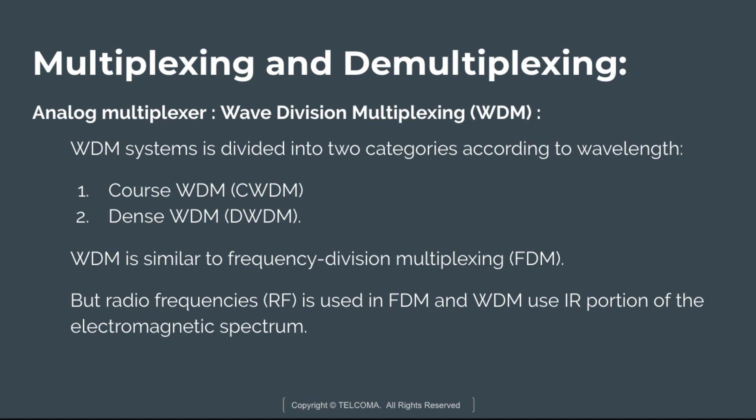WDM is further divided into two categories: Coarse WDM and Dense WDM. Coarse WDM combines multiple signals on a laser beam at various wavelengths for transmission along a fiber optic cable, with fewer channels than Dense WDM. Dense WDM (DWDM) is an optical multiplexing technology used to increase bandwidth over existing fiber networks by combining and transmitting multiple signals simultaneously at different wavelengths. WDM is similar to FDM, but FDM uses radio frequencies while WDM uses the infrared portion of the electromagnetic spectrum.